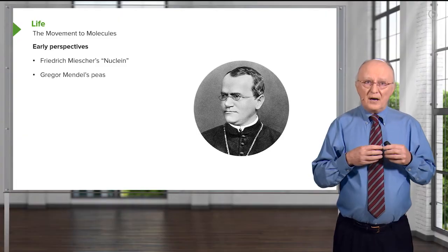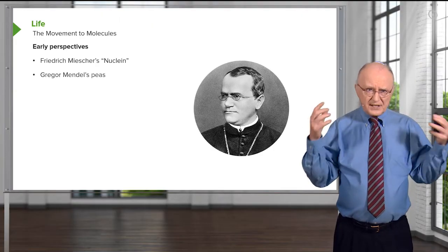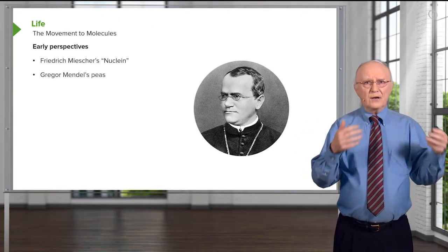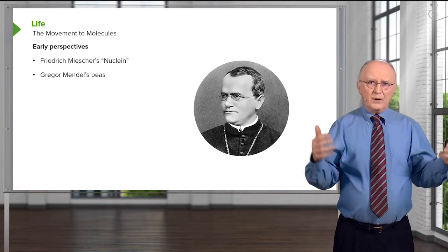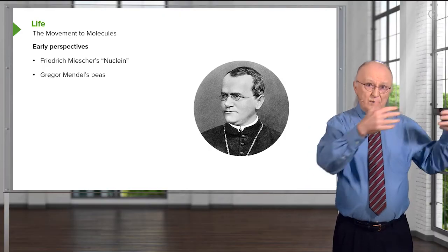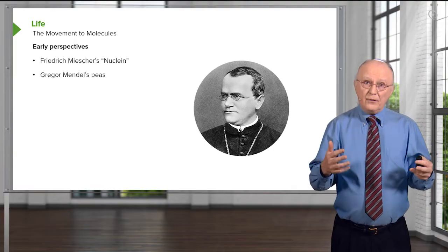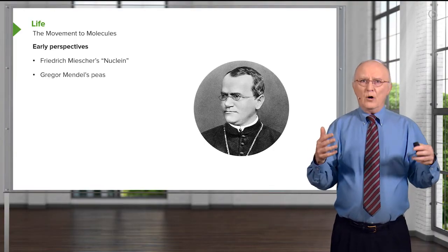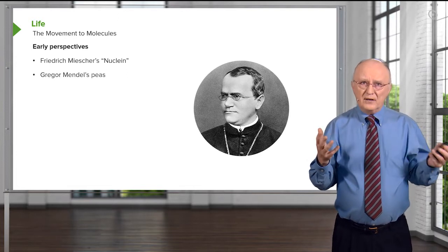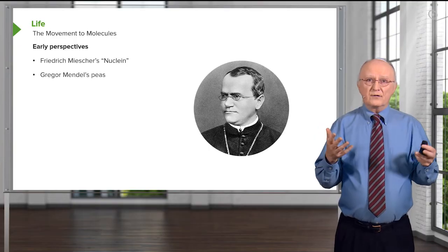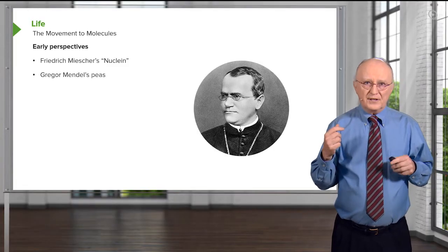The Augustinian monk Gregor Mendel was studying at about the same time as Miescher. Mendel was interested in studying the inheritance of traits from one generation of peas to another. He made very careful studies and realized that genetic information was being transferred from one generation to the next, and further, that this genetic information had properties he called recessiveness and dominance — traits that we associate with genes. Mendel's work was largely undiscovered for about 30 years, but when it was finally found, it was revealed as quite a revolutionary finding.